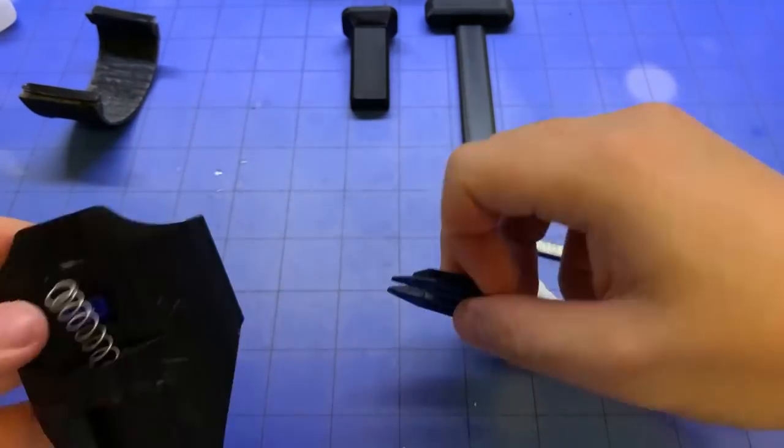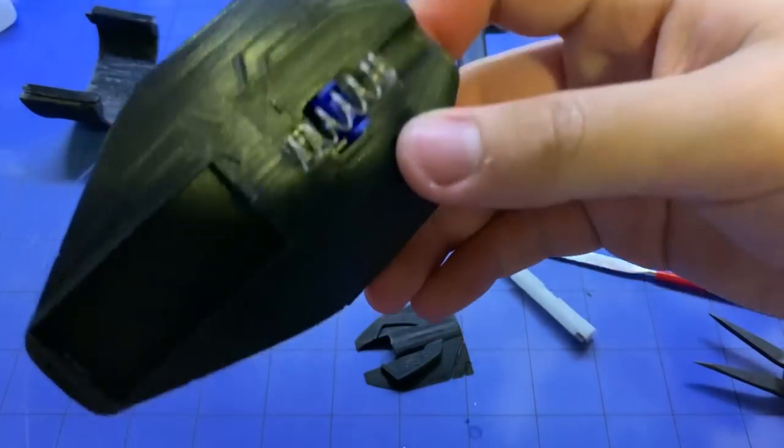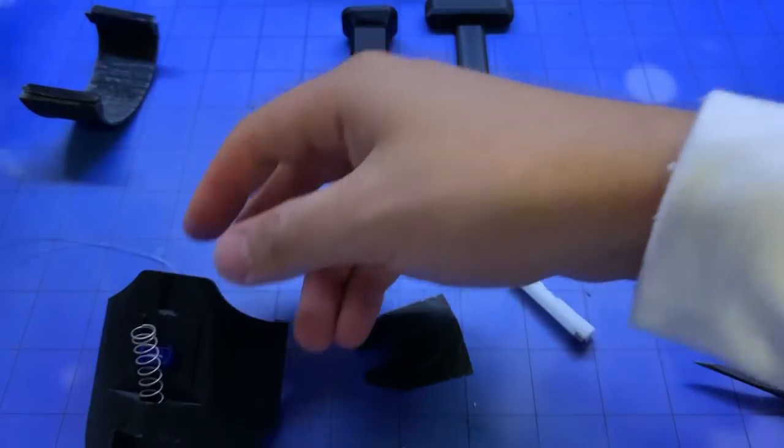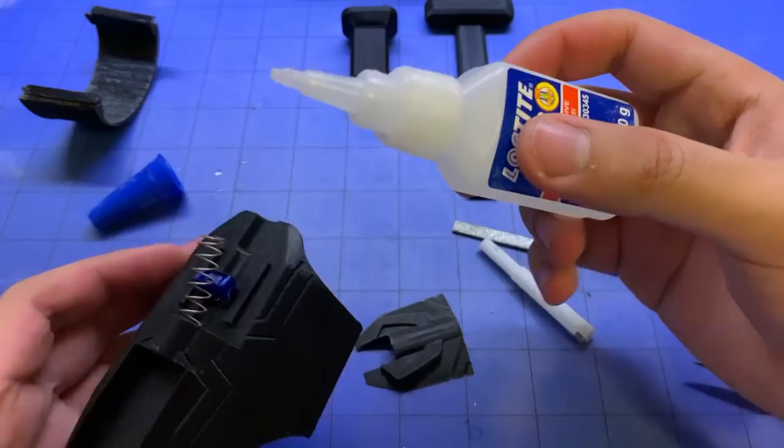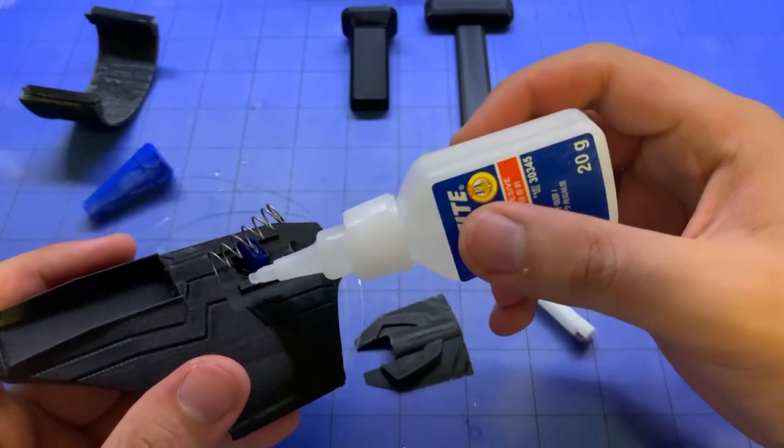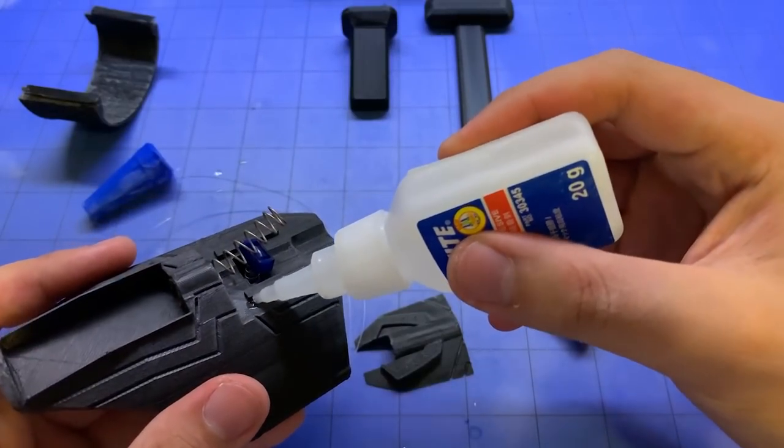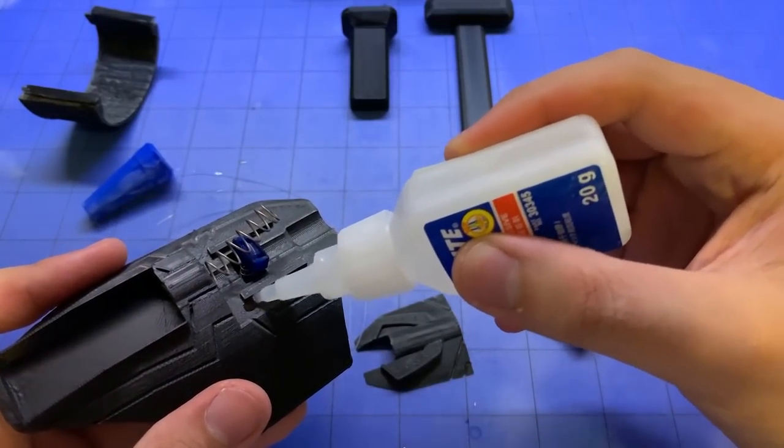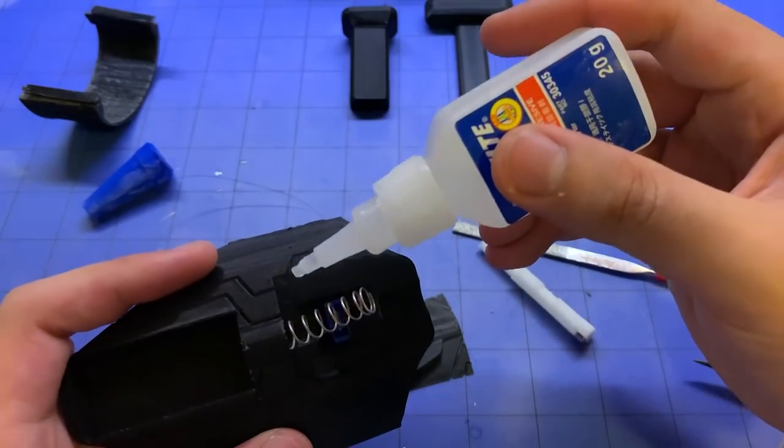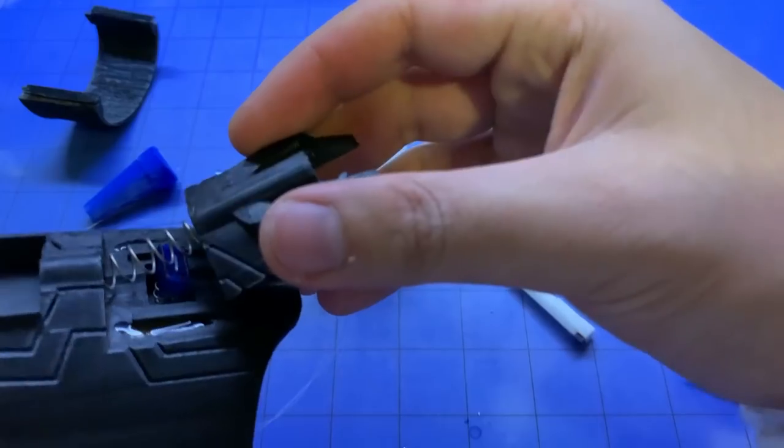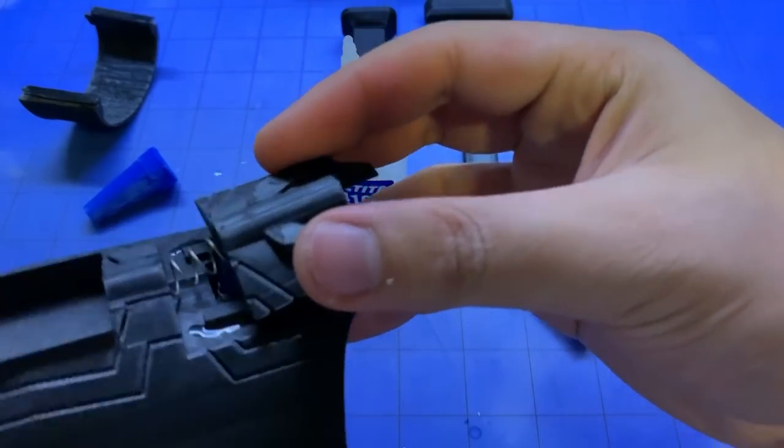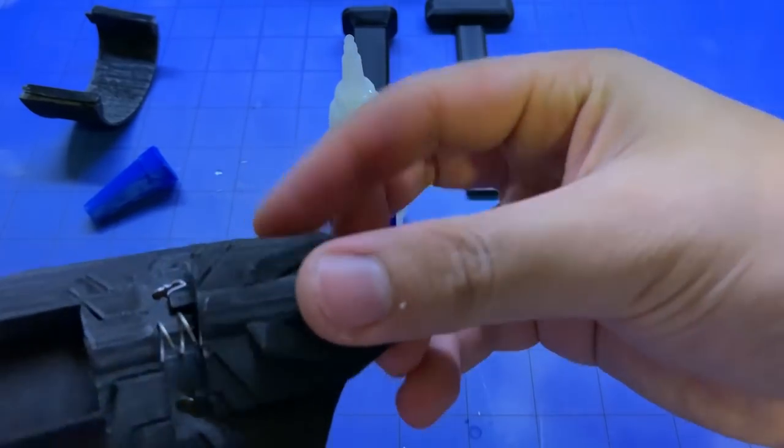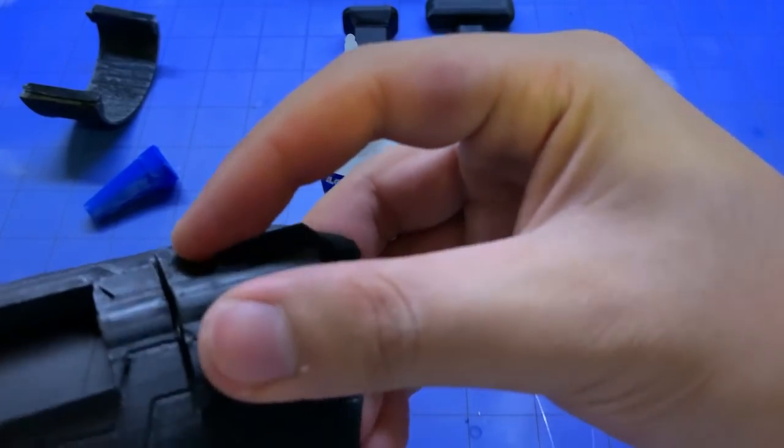So just go ahead. So once this is completely sanded away, only one thing left to do. Again, you take your super glue. You dab some on the side here, this area. Then dab inside here, this area. Line it up. Insert it all the way in. And press down.